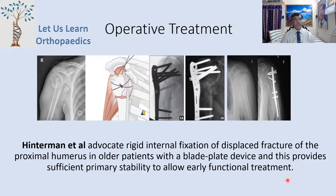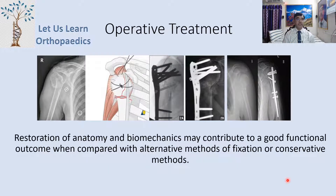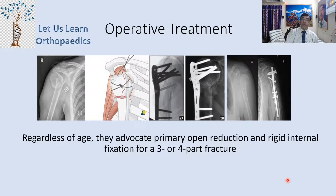For operative treatment, Hintermann et al. advocated rigid internal fixation of displaced fractures of the proximal humerus in older patients using a blade plate device, providing sufficient primary stability for early functional treatment. The restoration of anatomy and biomechanics may contribute to good functional outcomes. They advocated primary closed reduction and rigid internal fixation for all three- and four-part fractures regardless of age.